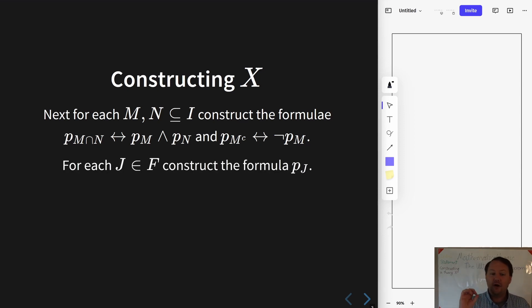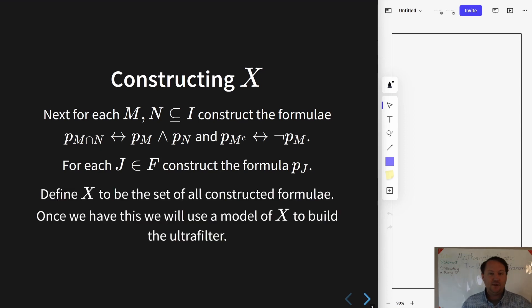Moreover, for every element of the filter, we enter the formula corresponding to it so that, in essence, this is declaring by p_J being in the set X, that is our way of declaring that J is in the filter in question. Okay, so as I've been describing, we'll go ahead and take the collection of all of these formulae that we have just described above, pack them into a set X, and then we want to show that X is satisfiable.